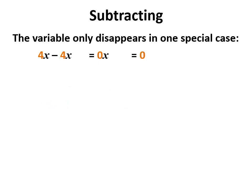There's one special case when the variable disappears and that's if you take away a number from itself. You have none of them and 0x equals 0.